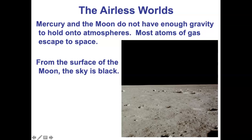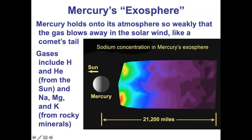Not all terrestrial planets have atmospheres though. Mercury and the Moon don't have enough gravity to hold on to one. When you look at the Moon — as seen in photos taken by the Apollo astronauts — the surface is airless. The sky is black because there's no atmosphere to scatter light. The Moon is just as far from the sun as the Earth, so it's not much hotter, but it has less gravity. Any gas released on the Moon just floats away. Mercury is pretty similar, though not quite.